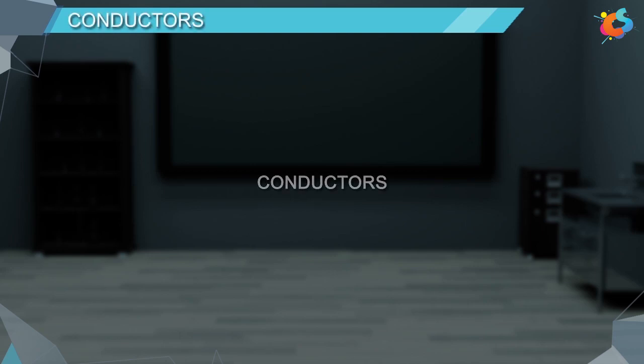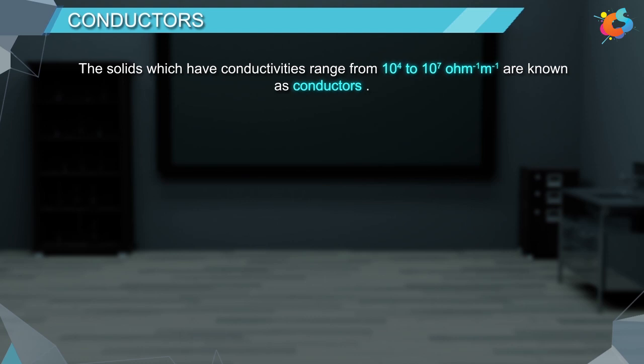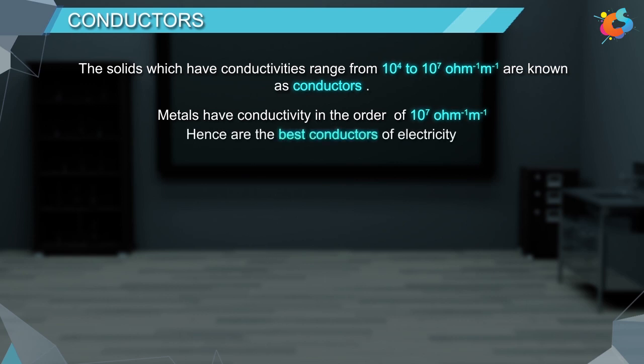Conductors. The solids which have conductivities ranging from 10⁴ to 10⁷ per ohm meter are known as conductors. Metals have conductivity in the order of 10⁷ per ohm meter and hence are the best conductors of electricity.